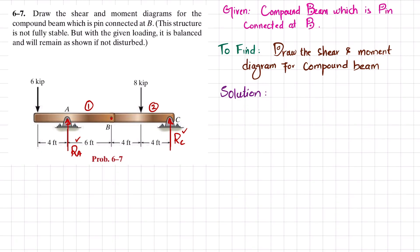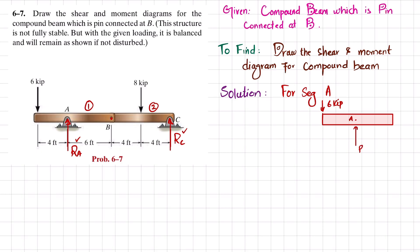Let's take segment AB. Drawing the free body diagram: the beam has a load of 6 kips, point A where we have RA, and at point B where we remove the pin there will be a reaction force RB acting downward — because this force tends to make it downward while RA is upward, so RB must be downward to keep it balanced.